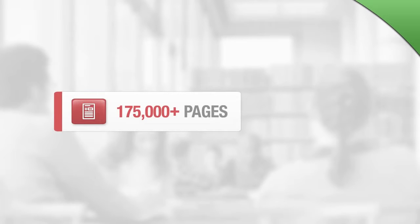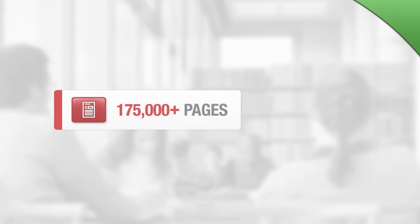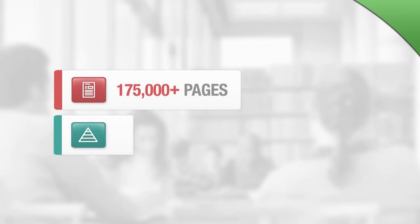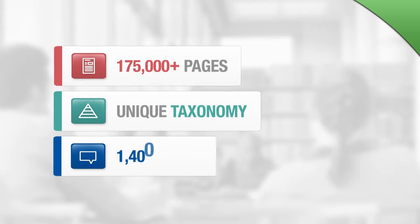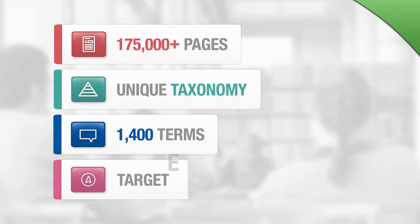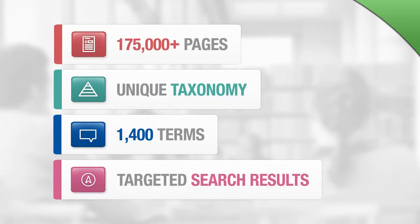More than 175,000 pages of leading SAGE content is supported by a unique taxonomy with 1,400 terms to provide truly targeted search results. Our editors have tagged all the content down to the chapter and encyclopedia entry level with terms from the taxonomy to enable users to find the content that they need quickly and easily.